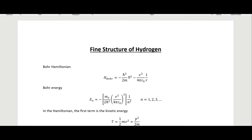In this video we will be looking at the fine structure of hydrogen. The fine structure comes from the relativistic correction because the electron is moving at a high velocity and has high momentum. Therefore it will have to have relativistic corrections, and we will be using perturbation theory to find those relativistic corrections. We have our Bohr Hamiltonian here, which just has the electrostatic potential.